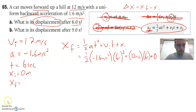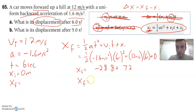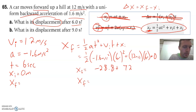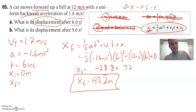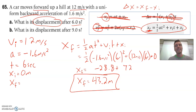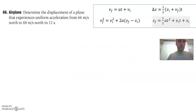Go ahead and hit pause, try to calculate the final answer, then unpause when you get it. If you do it correctly in your calculator, you're going to get 43.2 meters — that's your displacement after 6 seconds. For part B, it would be a similar process: you just plug in 9 seconds everywhere instead of 6 seconds. Let's go to the next one.